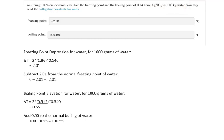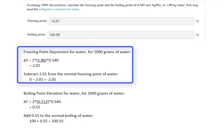For the freezing point depression, we calculate the delta T as 2 times 1.86 times 0.54, which gives us a temperature change of 2.01. This is then subtracted from zero to give us a new freezing point of negative 2.01.